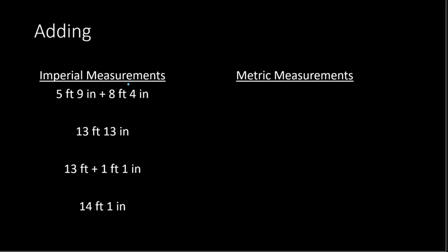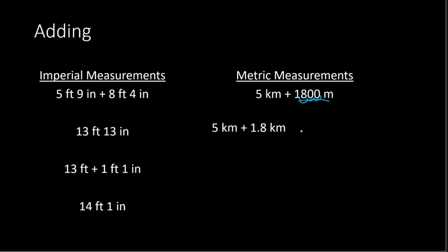Next we're going to work with metric measurements. Our example is adding 5 kilometers with 1,800 meters. Before we start adding, we want to make sure we convert one unit into the other type. There are actually two ways to do this — we could either convert kilometers into meters, or meters into kilometers. First, we'll convert 1,800 meters into kilometers. There are 1,000 meters in one kilometer, so going from smaller to larger units we divide by 1,000. The decimal point moves three places, giving us 1.8 kilometers. So we have 5 plus 1.8 kilometers, which equals 6.8 kilometers.